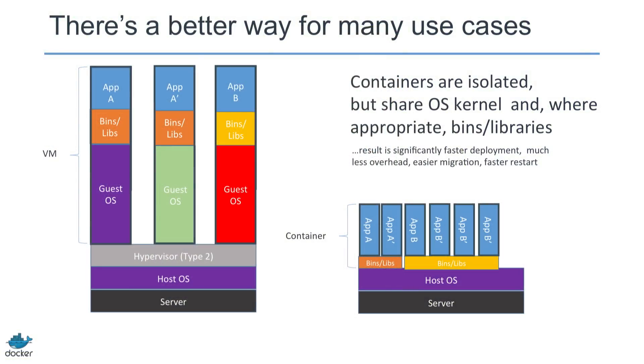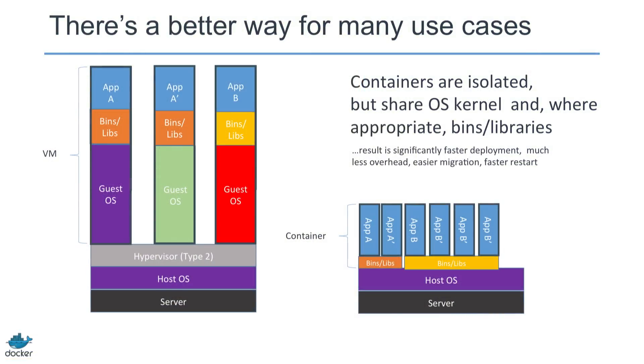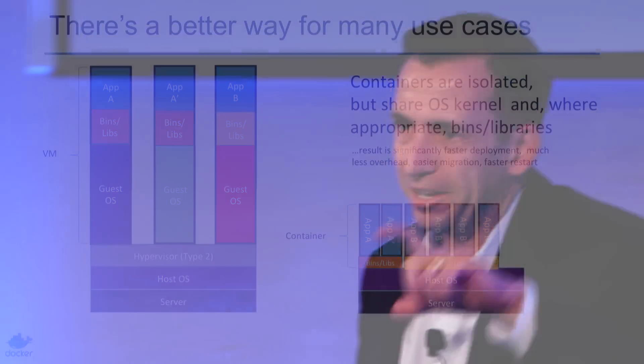If you look at what the VM was designed to do — get a Mac print server, a Microsoft Exchange server, and a custom Linux inventory app to all sit on the same physical device — we ended up taking that single-purpose physical server and turning it into a single-purpose virtual server. We took an application measured in megabytes and combined it with a guest OS measured in gigabytes, emulated disk, and ran it on top of a hypervisor, on top of a host OS, on top of a server. And that worked great — but we're in a different world now.